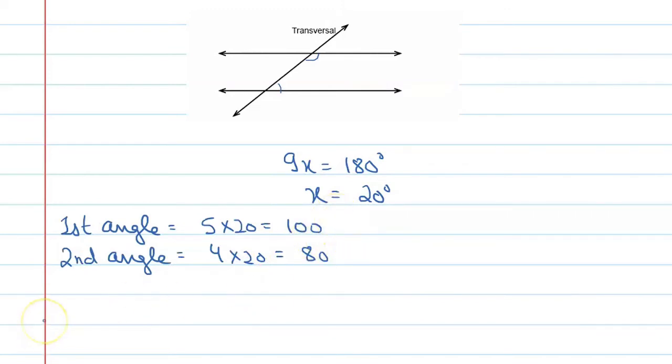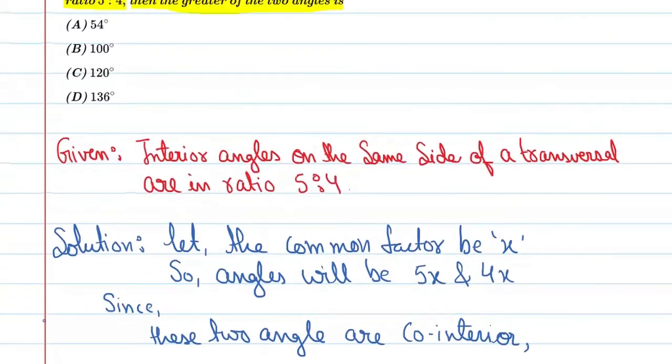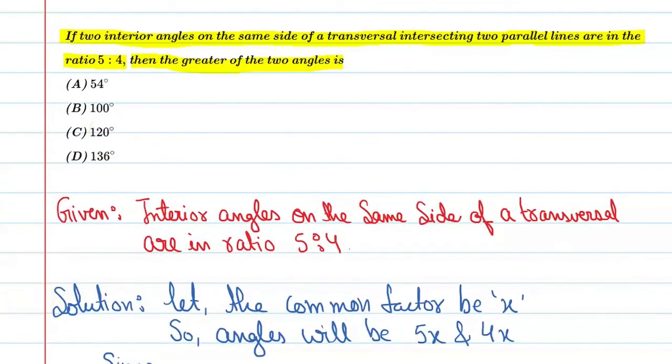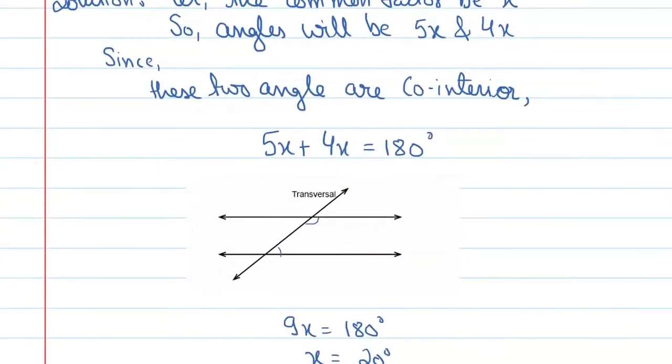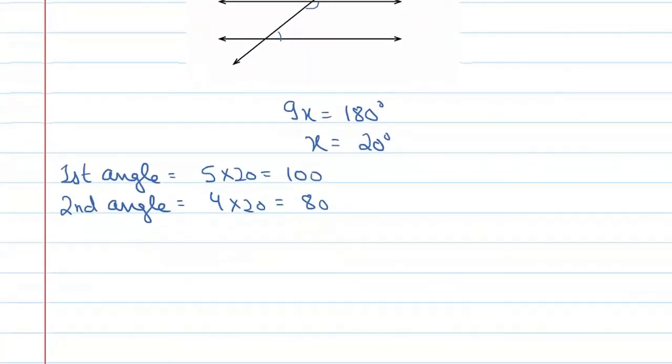So we can say that the largest angle is 100 degrees, and the correct option is B.